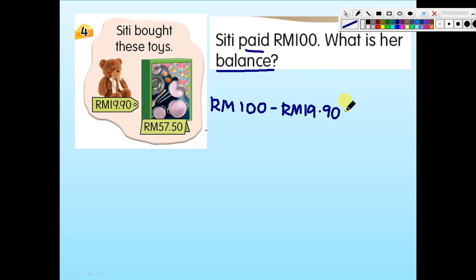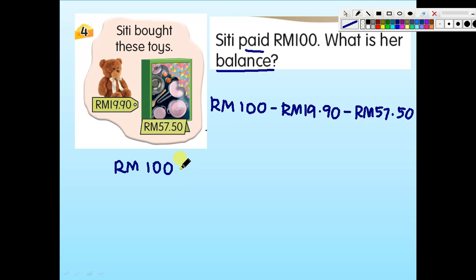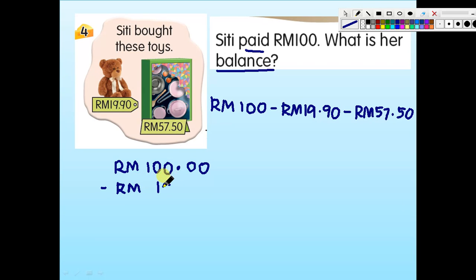RM100 has no cents, so just add a decimal point and write dot zero zero — RM100.00. The value is still the same, still RM100. Subtract RM19.90. Make sure the decimal points are aligned. 0 minus 0 is 0. Then 0 minus 9 — cannot! You need to borrow from the neighbor.